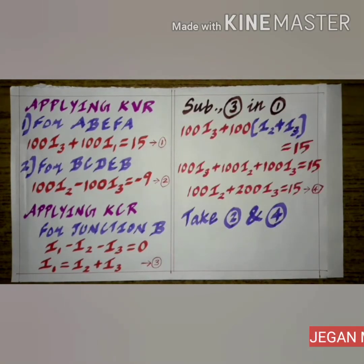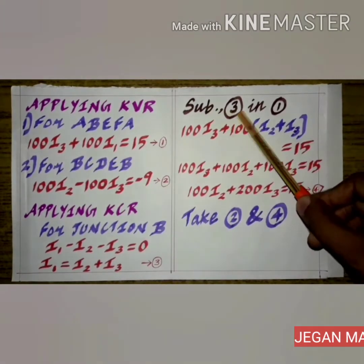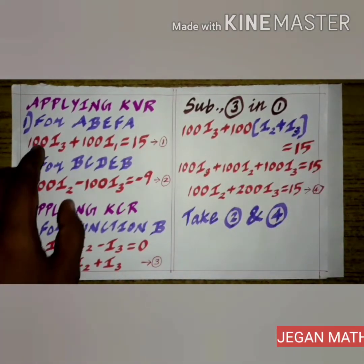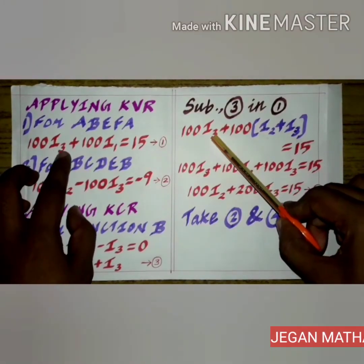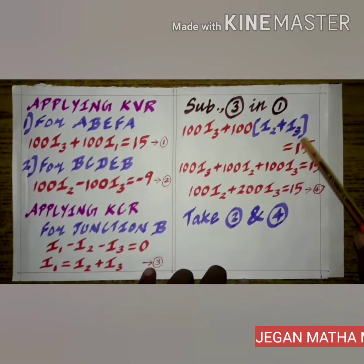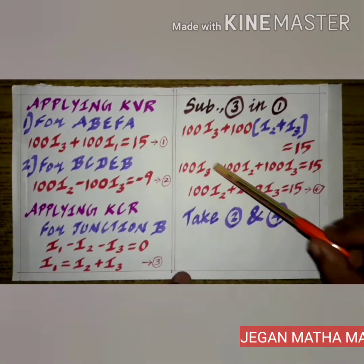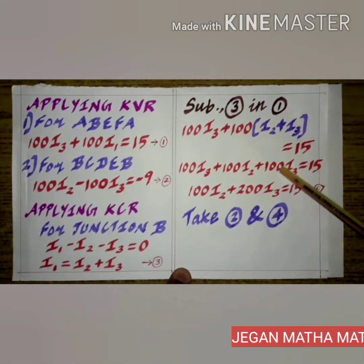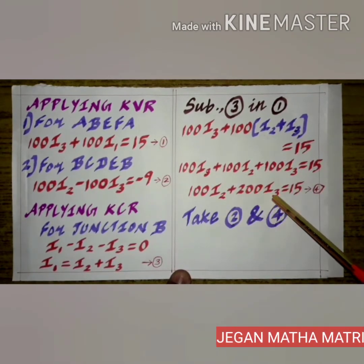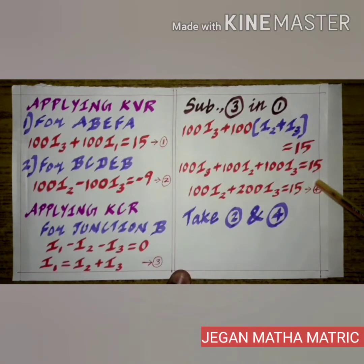Now we substitute Equation 3 into Equation 1. Equation 3 states I1 equals I2 plus I3. Substituting into Equation 1: 100 I3 plus 100 times (I2 plus I3) equals 15. Expanding the bracket: 100 I3 plus 100 I2 plus 100 I3 equals 15. Combining like terms: 100 I2 plus 200 I3 equals 15. We take this as Equation 4.